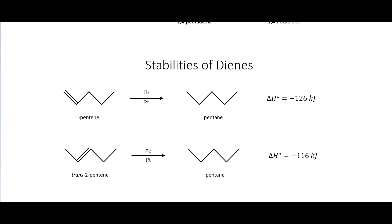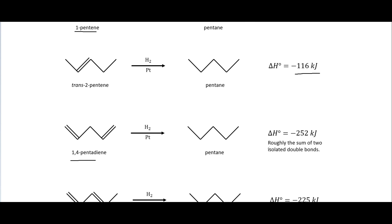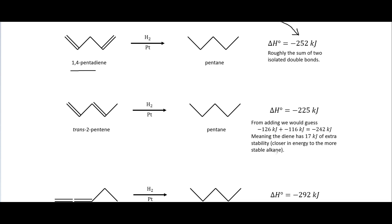One interesting thing about conjugated systems is that they have quite a bit of extra stability. If we hydrogenate 1-pentene with H₂ and platinum, that is exothermic, giving off −126 kJ/mol. An internal alkene is a little more stable at −116 kJ/mol. If we have two isolated double bonds, the heat given off is roughly the sum of two isolated double bonds — about −252 kJ/mol. Whereas when we have a conjugated system, this goes down quite a bit to −225 kJ/mol. We would have guessed about −242 kJ/mol, since we have one internal and one terminal double bond rather than two terminal double bonds.